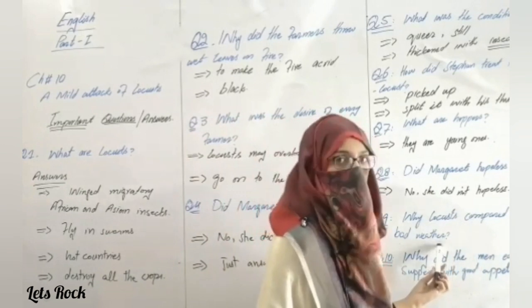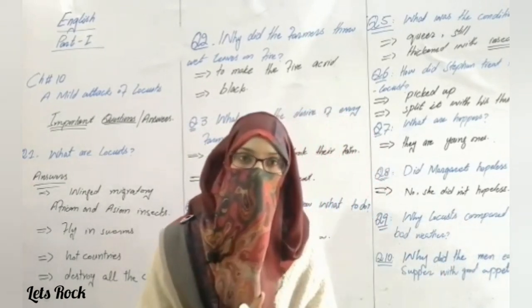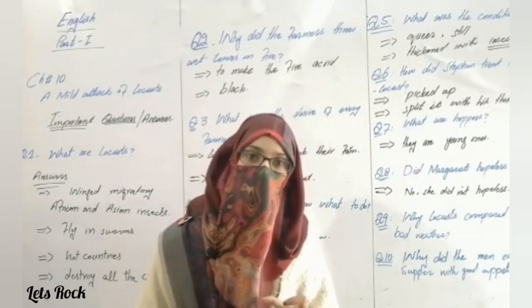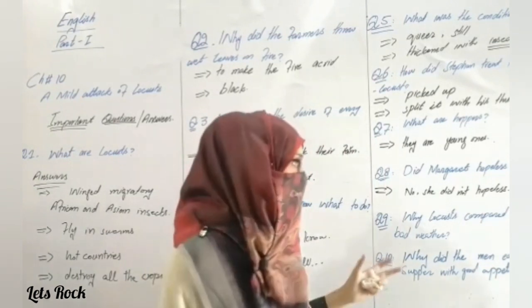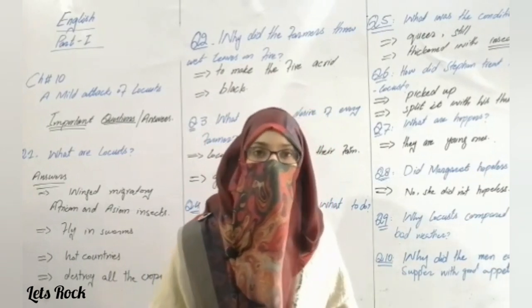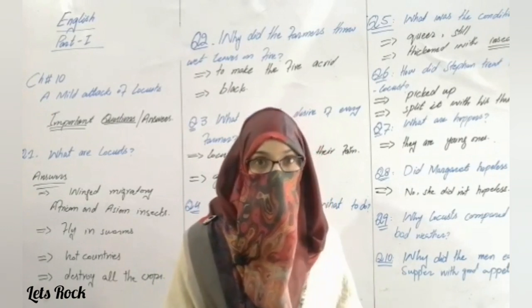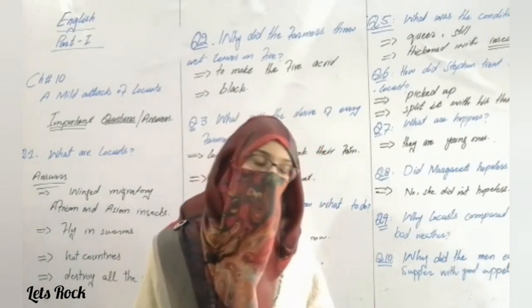Question number ten: Why are locusts compared with bad weather? Because just as the threat of bad weather always hangs overhead, similarly the threat of locusts always hangs overhead. Locusts pass over like bad weather but can attack again at any time.